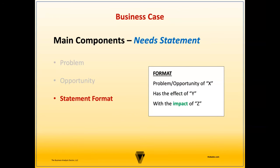An impact, on the other hand, refers to a broader, more far-reaching, and often long-term consequence of a situation or event. Impacts are typically the result of a chain reaction of events and can affect various aspects of a system or environment. They're often harder to measure and may be delayed or have cumulative effects. Impacts are more significant than effects, and they can shape the overall trajectory of a situation.